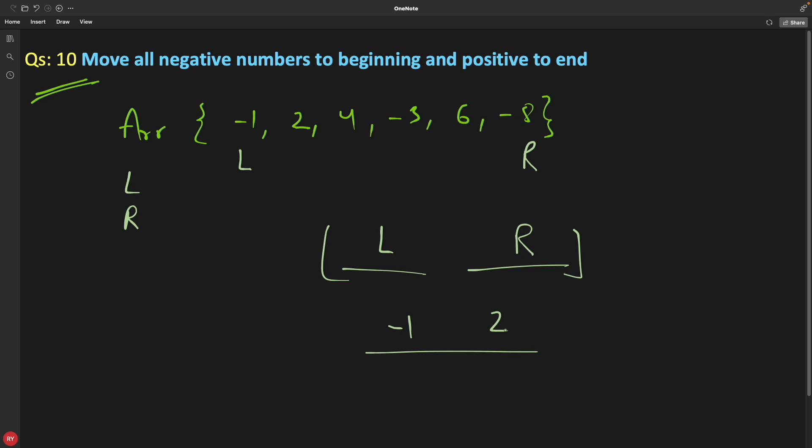Minus 1 is actually before 2, right? And this is what we need. We are not going to do anything. What if you find something like 2 and minus 1? Then is this the order what we are looking for? No, minus 1 should come before 2, right? Then we need a swap here.